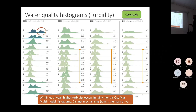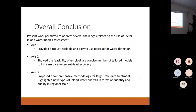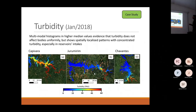Another interesting observation is that the histograms are bimodal or multimodal, especially during rainy periods like January 2018. These multimodal histograms with higher median values evidence that turbidity does not affect water bodies uniformly.